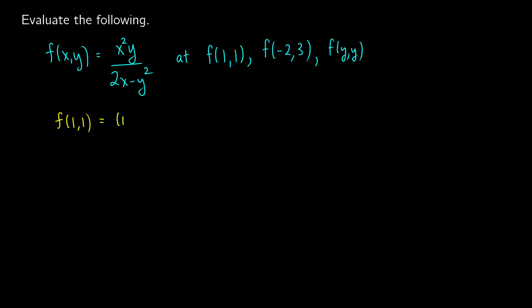So we're going to get 1 squared times 1, divided by 2 times 1 minus 1 squared. That gives us 1 on the top and 2 minus 1 on the bottom, so we just get 1. This means that if we take the point (1, 1), our function outputs 1.